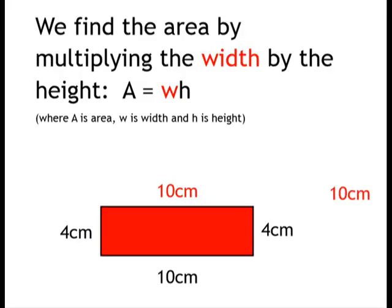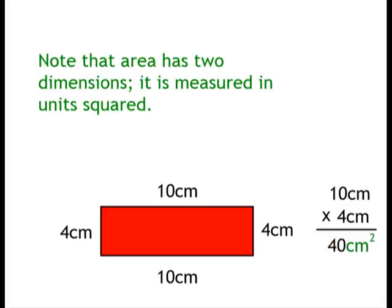So my width is 10cm, my height is 4cm, and when I multiply those together, I get 40cm squared. Note that area has two dimensions and it's measured in units squared, in this case, cm squared.